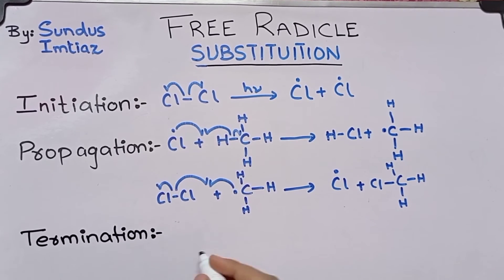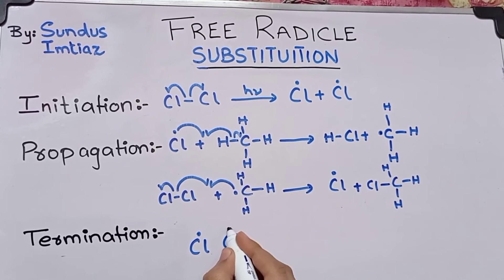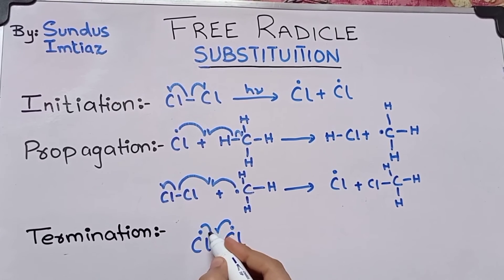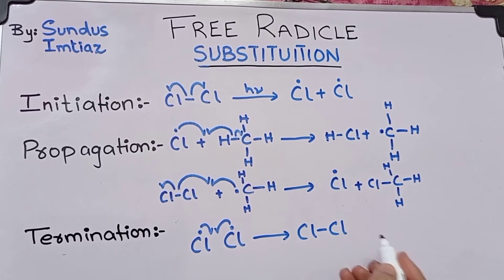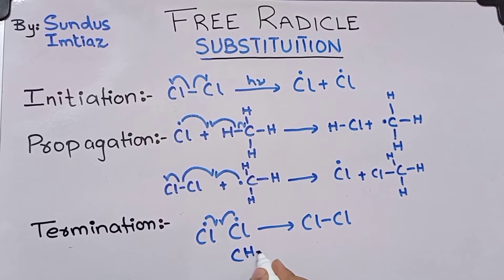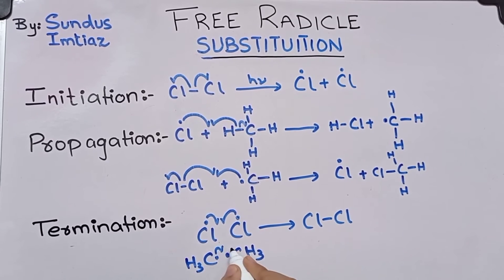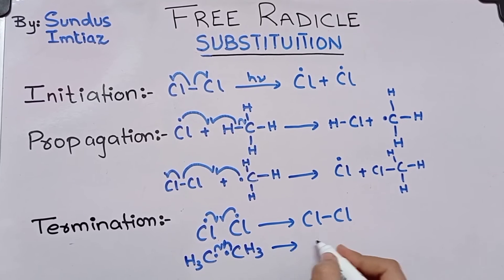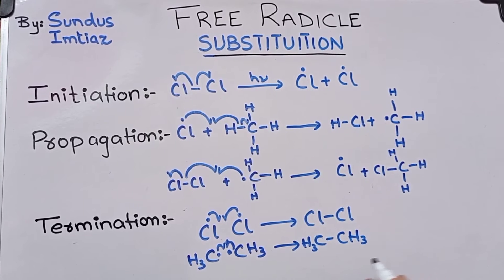The last step is termination, in which two free radicals having unpaired electrons bond together to form paired electrons, stopping the reaction. These radicals also bond with each other to form ethane, terminating the chain.